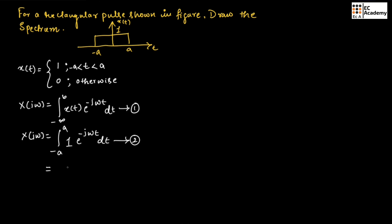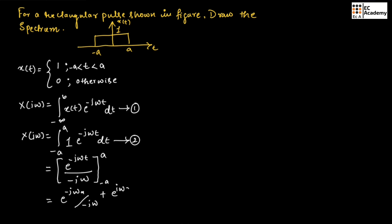Now if we integrate this term, we will get exponential to the power of minus jωT divided by minus jω, evaluated between the limits minus A to A. If we substitute the limits, we will get exponential to the power of minus jωA divided by minus jω, plus exponential to the power of jωA divided by jω. From this term, if we take 1 by jω as common, we will get exponential to the power of jωA minus exponential to the power of minus jωA.